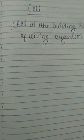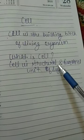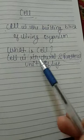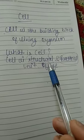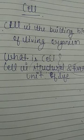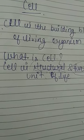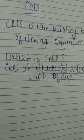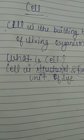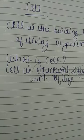Let us define what a cell is. A cell is the structural and functional unit of life. When I say 'structural unit,' that means the structure of a living organism is basically made up of cells. When I say 'functional unit,' I mean all the functions performed inside our body — digestion, excretion, respiration, circulation — so many processes take place inside the human body.